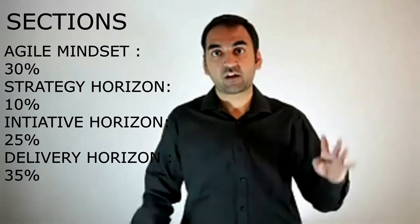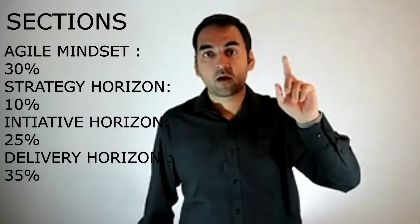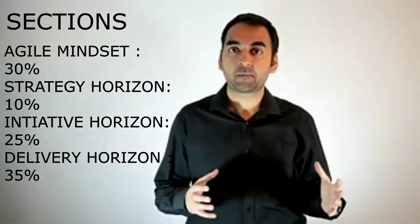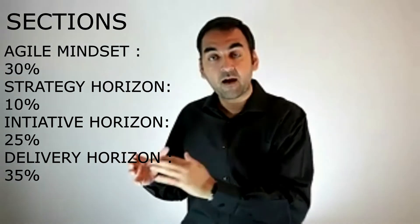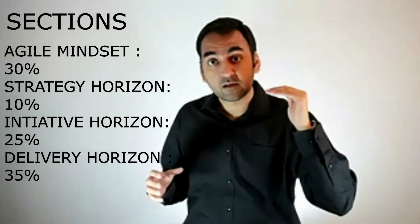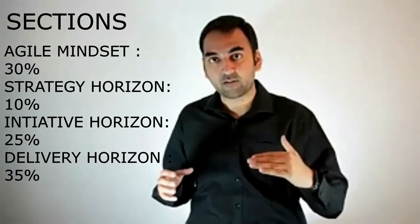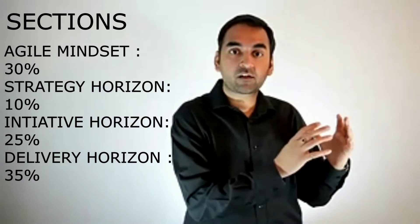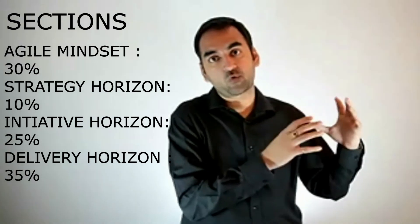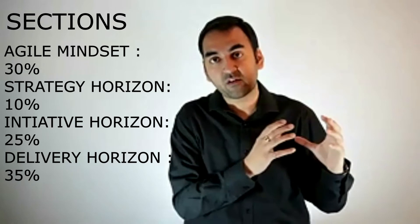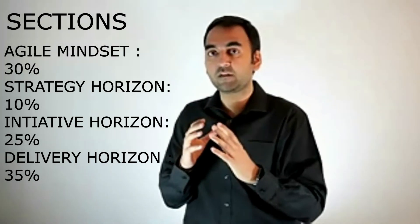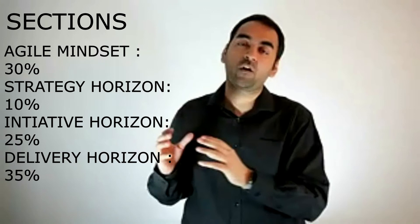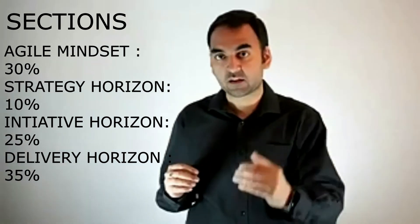So IIBA has divided the entire examination into four sections. Number one is agile mindset, and the remaining three are strategy horizon, initiative horizon, and delivery horizon. From agile mindset, you can expect close to 30% of questions; from strategy horizon, 10%; from initiative horizon, 25%; and delivery, 35%.